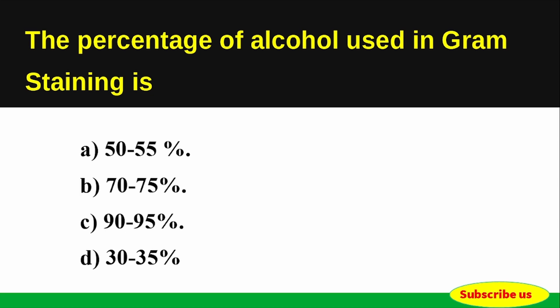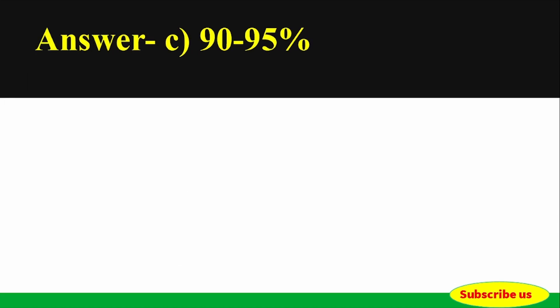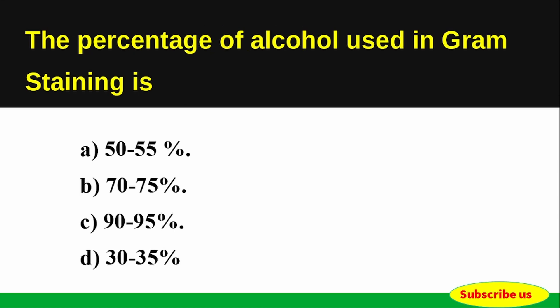Question: The percentage of alcohol used in Gram staining is — Options: A) 50-55%, B) 70-75%, C) 90-95%, D) 30-35%. Correct answer: Option C — 90-95%. The percentage of alcohol used in Gram staining is 90-95%.